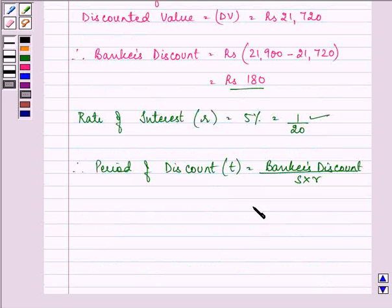Which is further equal to 180 upon S. That is 21,900 into R. That is 1 upon 20. That means 20 will go in the numerator.